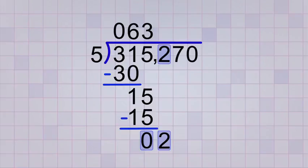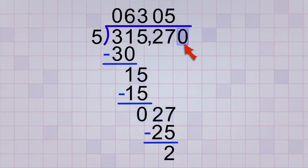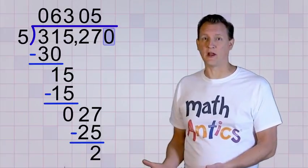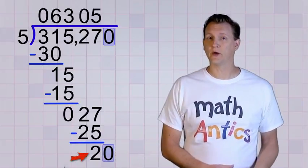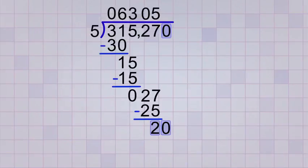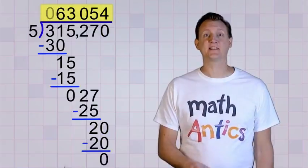Now we ask how many times will 5 divide into 2? 0. 5 is too big, so we need to move on to the next digit and bring a copy of it down also. There. That's better. Now we ask how many times will 5 divide into 27? 5. 5 times 5 is 25, and 27 minus 25 gives us a remainder of 2. Now for that last digit, which is a 0. And you might wonder, why do we even have to bring a copy of a 0 down? Isn't that nothing? But the 0 is an important placeholder, and when we bring a copy of it down, it changes our remainder of 2 into a remainder of 20. Now that's a big difference! Now we ask how many times will 5 divide into 20? 4. 4 times 5 is 20, and 20 minus 20 is 0. Yes, we're done! There's no more digits to divide, and you can see that our final answer is 63,054.